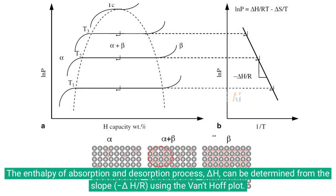The enthalpy of absorption and desorption process, delta H, can be determined from the slope, minus delta H/R, using the Van't Hoff plot.